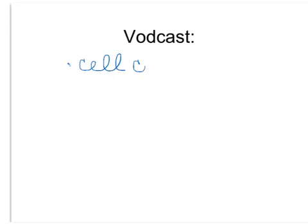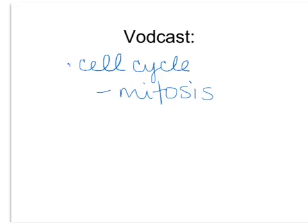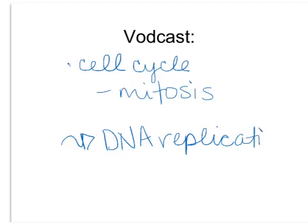In class we've already discussed DNA, chromatin, chromosomes, and how that fits into the human genome. In this podcast we're going to talk about the cell cycle, and specifically mitosis. The reason we're briefly discussing these two subjects is because we need to look at the process of DNA replication. We're going to break that down into four steps, and that's where I want you to focus in this video.